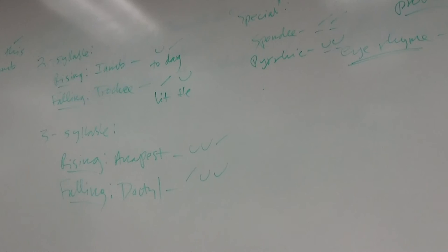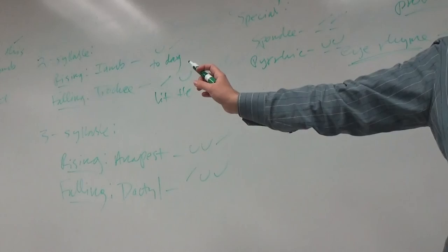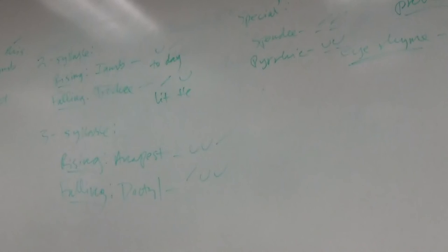So we would call this a tetrameter line, because it's made up of four feet. So trimeter would be a line of three feet, pentameter, five feet, hexameter, six feet, and so on and so forth. We name the line based on the number of feet, not based on the number of syllables. So if I was to ask you how many syllables are in an iambic pentameter line, how many would that be? That's the number of feet in the line. If I'm telling you the feet are iambs, then how many syllables will be in the line? Yeah, exactly. Yeah, so iambic pentameter would have ten syllables.